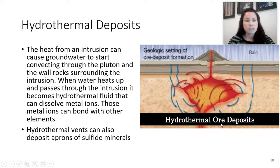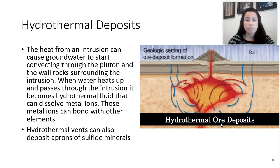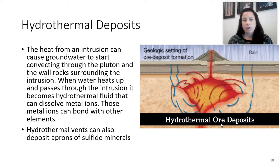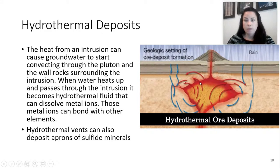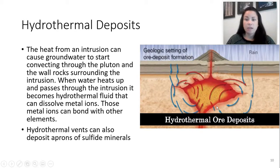We have hydrothermal deposits. Heat from an intrusion can cause groundwater to start convecting through a pluton or dike and the wall rock surrounding the intrusion. When the water heats up and passes through, it becomes a hydrothermal fluid that can dissolve metal ions. Those are then carried with the fluids and deposited in hydrothermal vents near a volcano, or as shown here, through rain that cools the magma around an intrusion, creating these hydrothermal deposits.